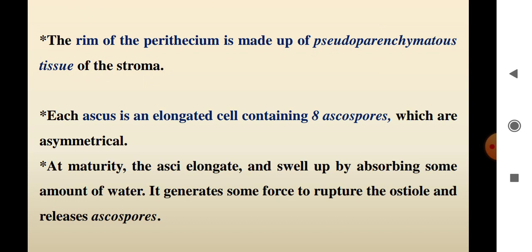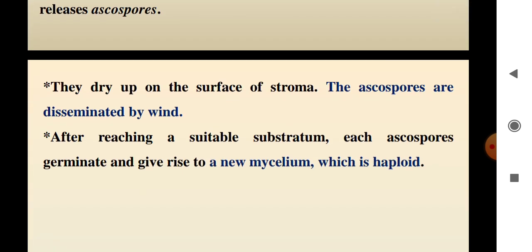Each ascus is an elongated cell that contains 8 ascospores which are asymmetrical. At maturity, the asci elongate and swell up by absorbing water. This generates force to rupture the ostiole and release the ascospores. The ascospores dry on the surface of the stroma and are then disseminated by wind.